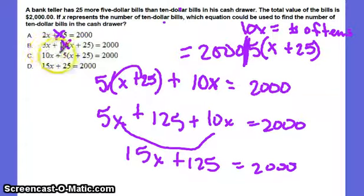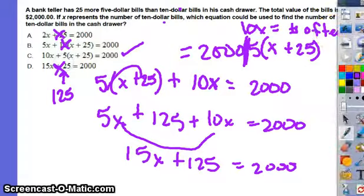10 times X is okay, plus the 5, parentheses X plus 25, that's okay, equals 2,000. So that looks good. And what's wrong with letter D is that the 25, they did not distribute the 5 to the 25. That should be 125 right there, and that's what's wrong with D. So C is the best answer choice for that one.